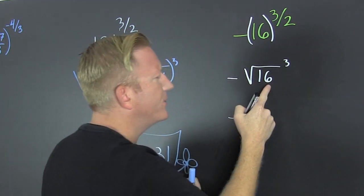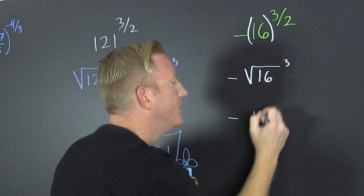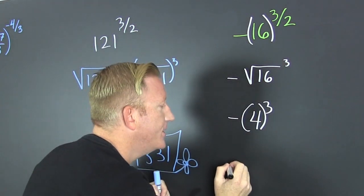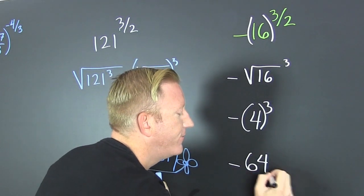So, then, that's a minus. What's the square root of 16? Oh, it's 4 to the 3rd. And again, the 3 is only on the 4. So, that's a minus 64.